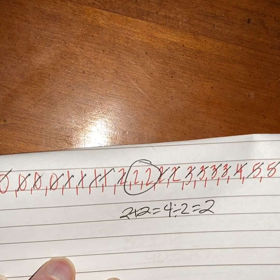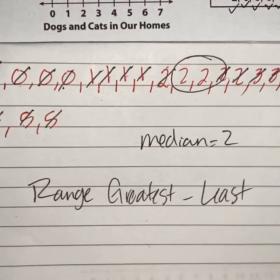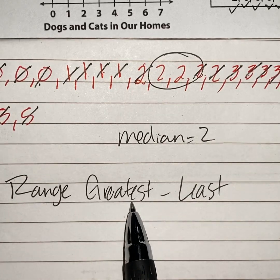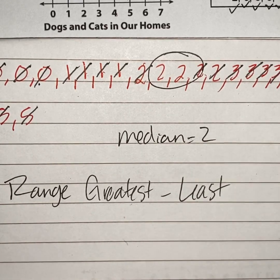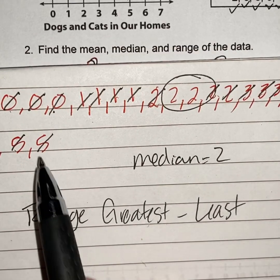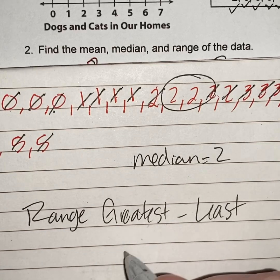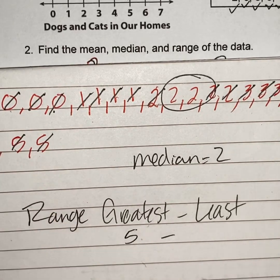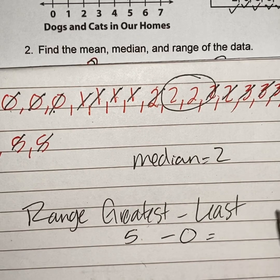The last thing you have to do is the range. So your range is going to be your greatest number minus your least number. So my greatest number here is five. It's going to be five minus zero, and that equals five.